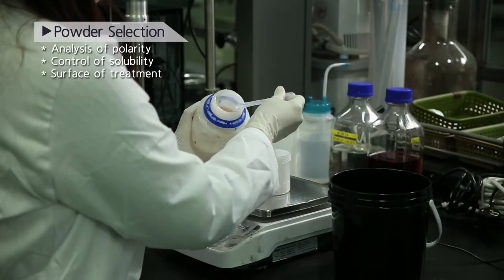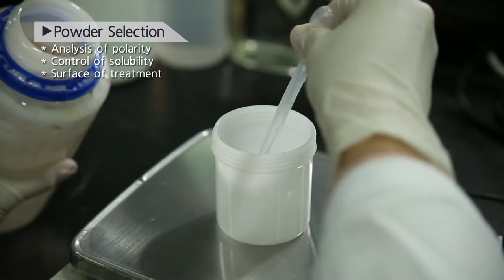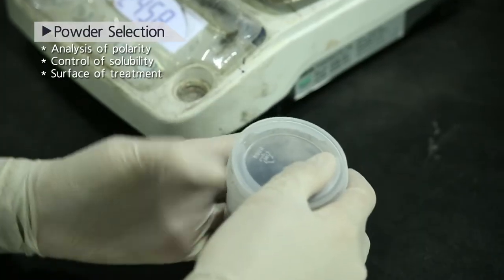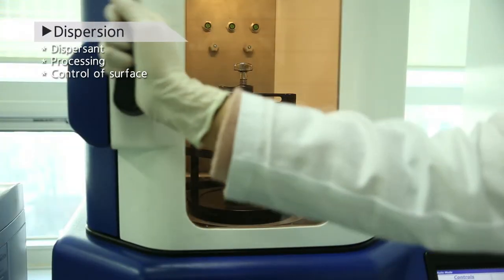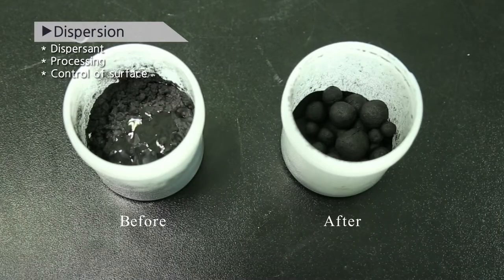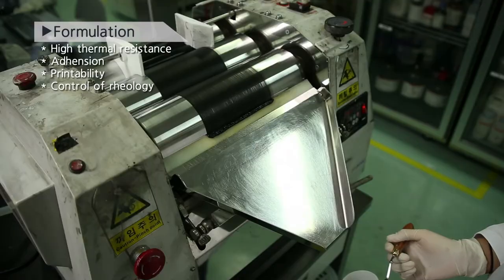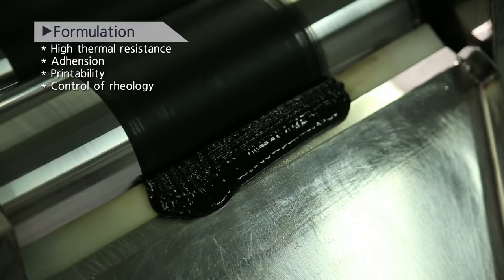The nanocarbon film heater uses carbon nanotubes and carbon nanoplates as heating sources and, to fit in the heating environment, the film is manufactured through mixing, dispersion, and formulation processes.